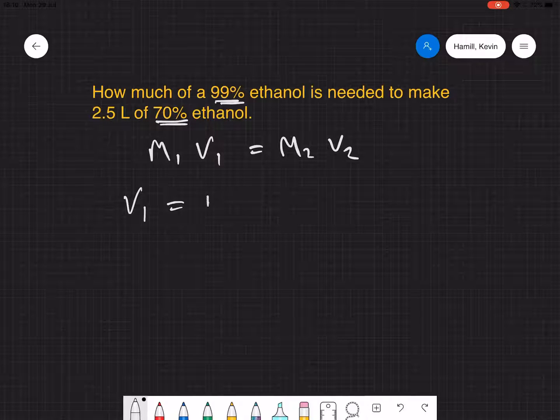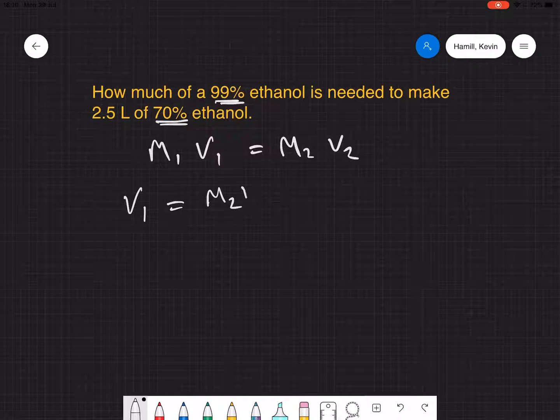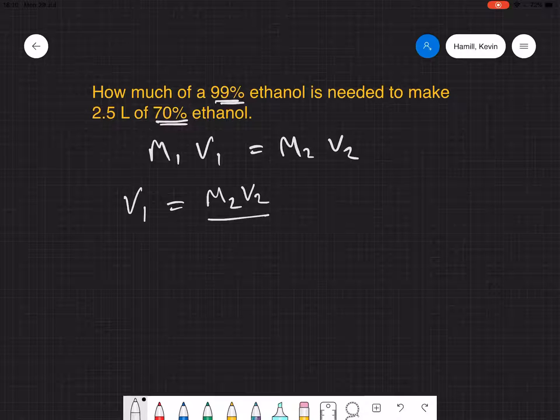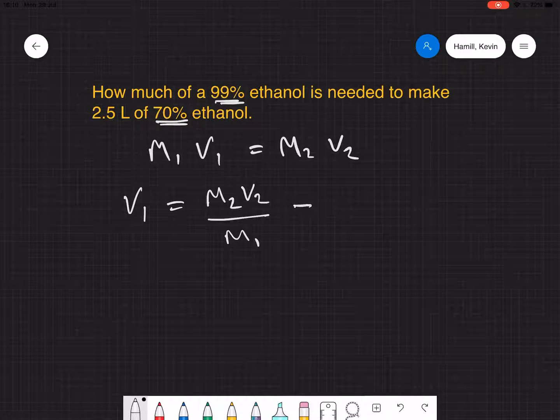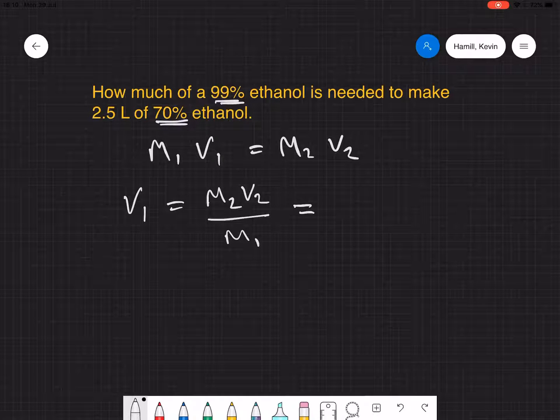So the volume you want is equal to the molarity we want times the volume you want divided by the molarity, in this case concentration, that we have. So let's just identify what's what.